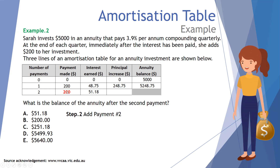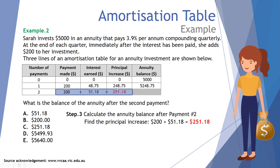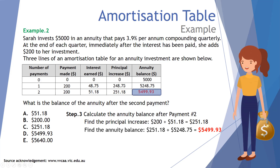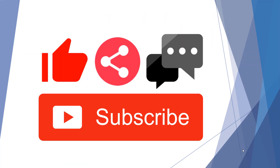We add $51.18 to our table. Payment two is $200. Step three: calculate the annuity balance after payment two. The principal increases by $200 plus $51.18, giving a principal increase of $251.18. Adding that to the previous balance of $5,248.75, the annuity balance after two payments is $5,499.93, which is option D. Thank you for watching this video on amortization tables and annuity investments — please like, share, comment, and subscribe.